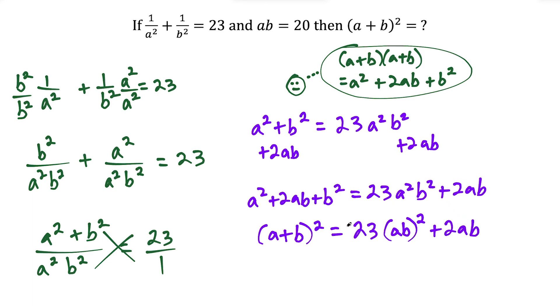So now we could make substitutions here. We could finally use that second equation, the ab equals 20. And we could say that a plus b in parentheses squared is equal to 23 times ab is 20, so we could replace ab with 20, and we're squaring it, and we have plus 2 times ab is 20.